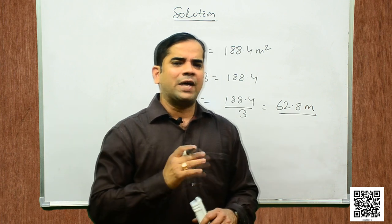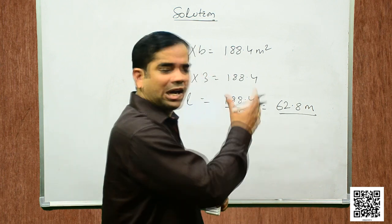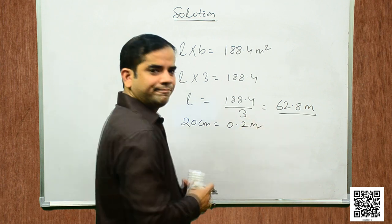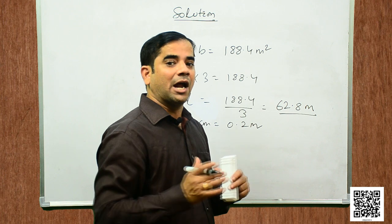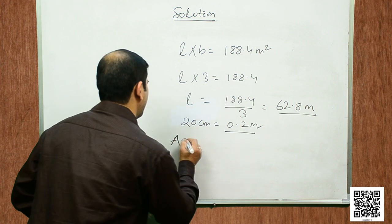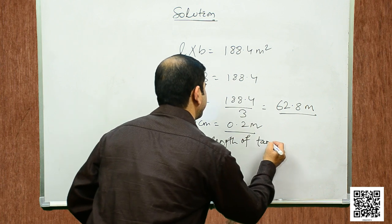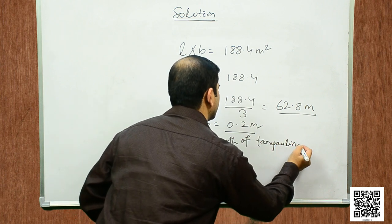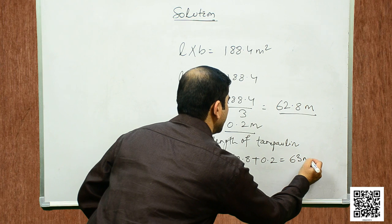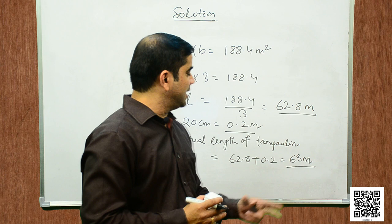Given that the wastage margin is 20 centimeters, let us convert it to meters: 20 centimeters = 0.2 meters. So the actual length of tarpaulin sheet required will be the sum of both lengths: 62.8 + 0.2 = 63 meters. So, the length of the required tarpaulin sheet is 63 meters.